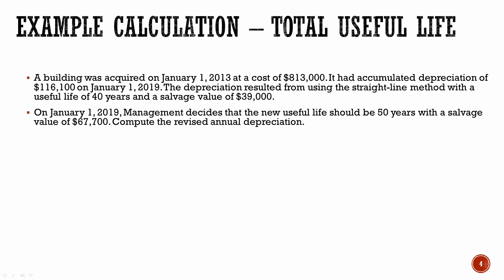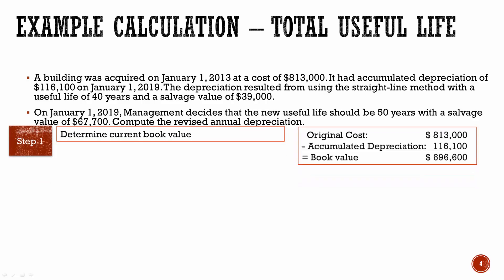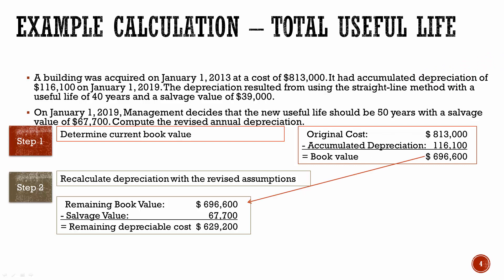So now we need to calculate the revised annual depreciation. Again, our first step is to determine the current book value. The original cost was $813,000. We subtract out the accumulated depreciation and determine that our book value is $696,600 — that's the book value on January 1, 2019. Now that we have our current book value, we subtract out the new salvage value of $67,700, and we determine that the remaining depreciable cost is $629,200.